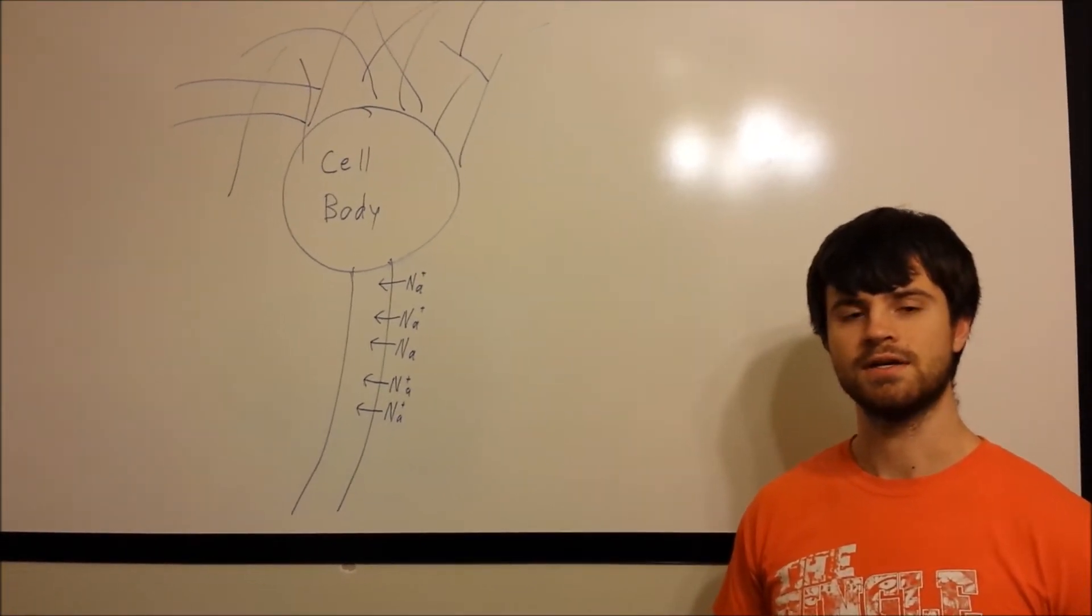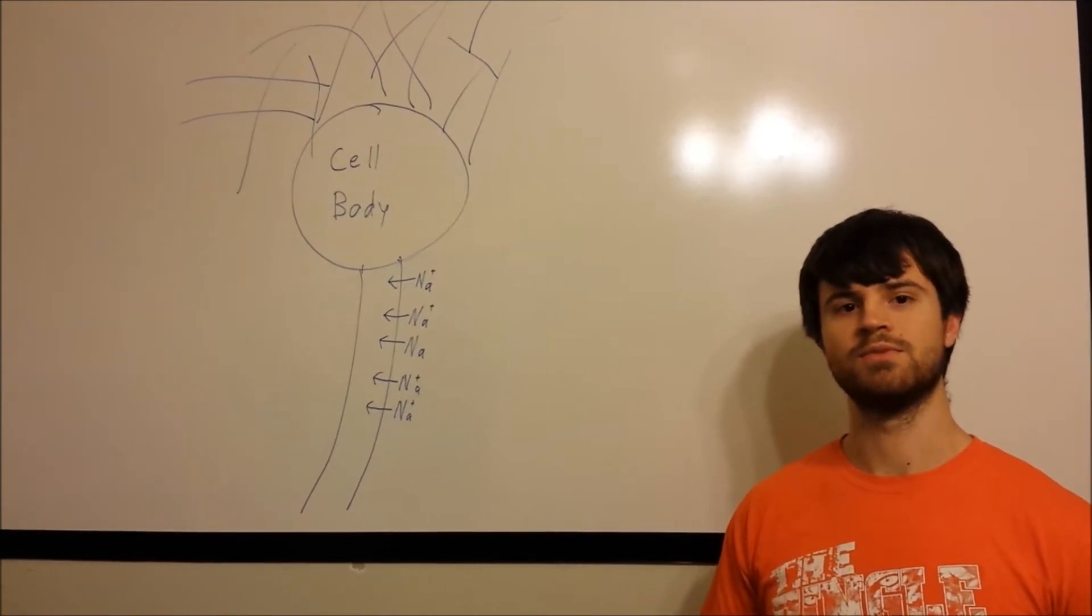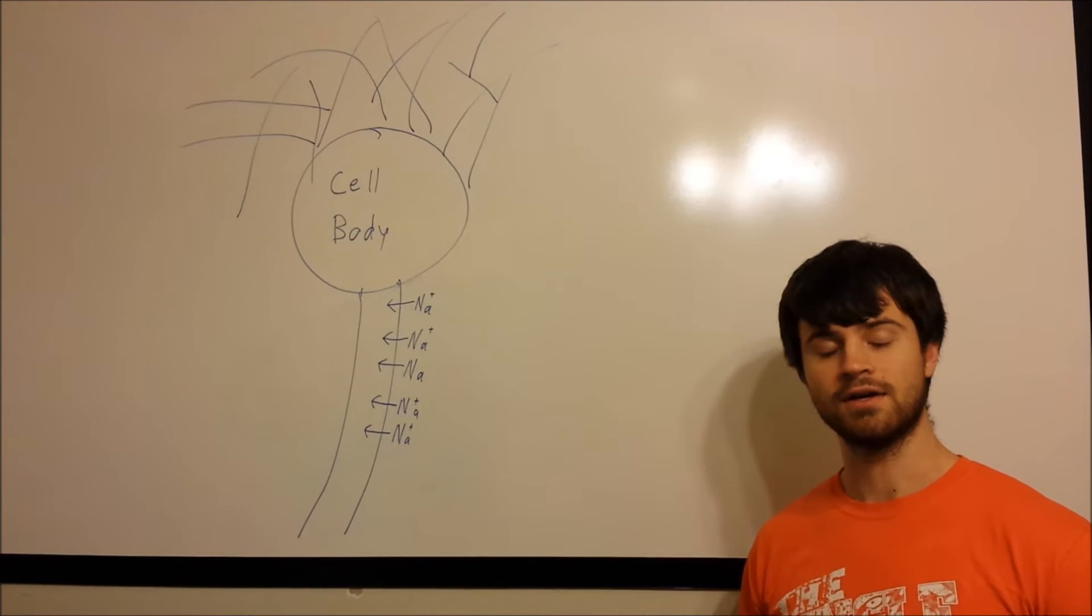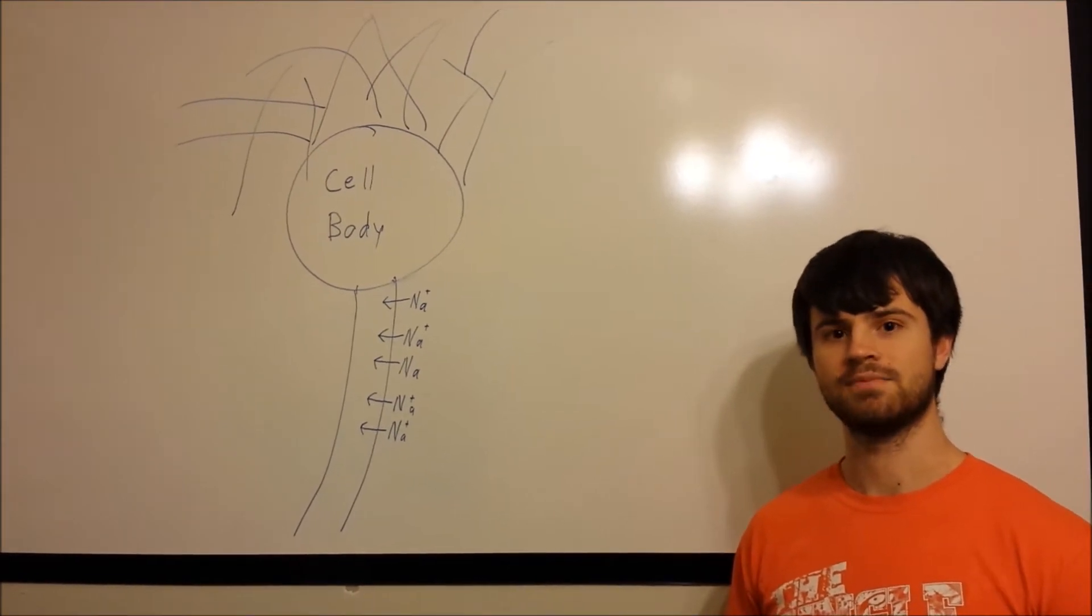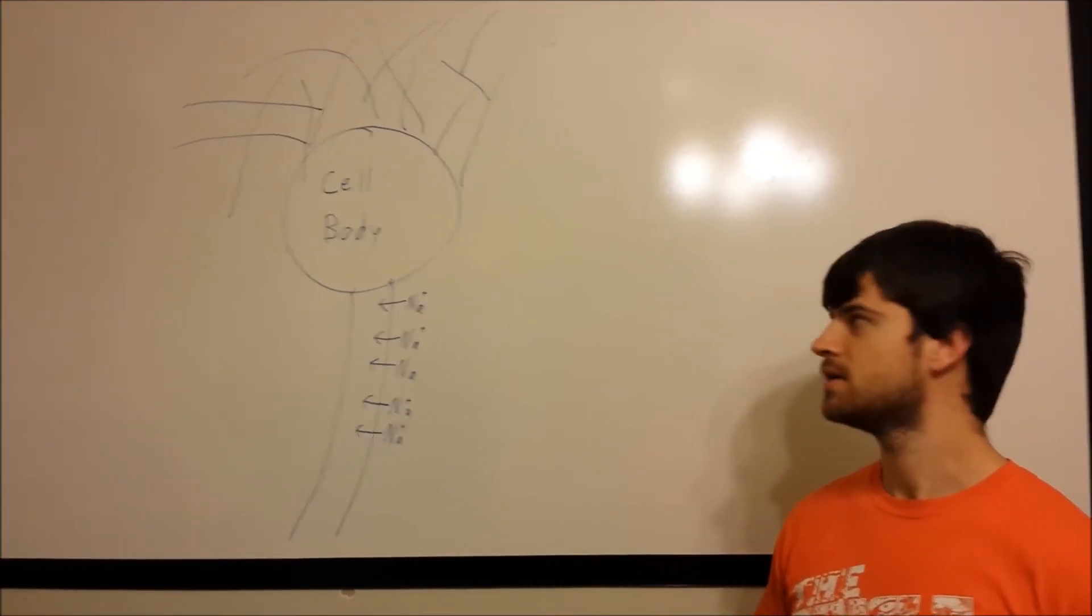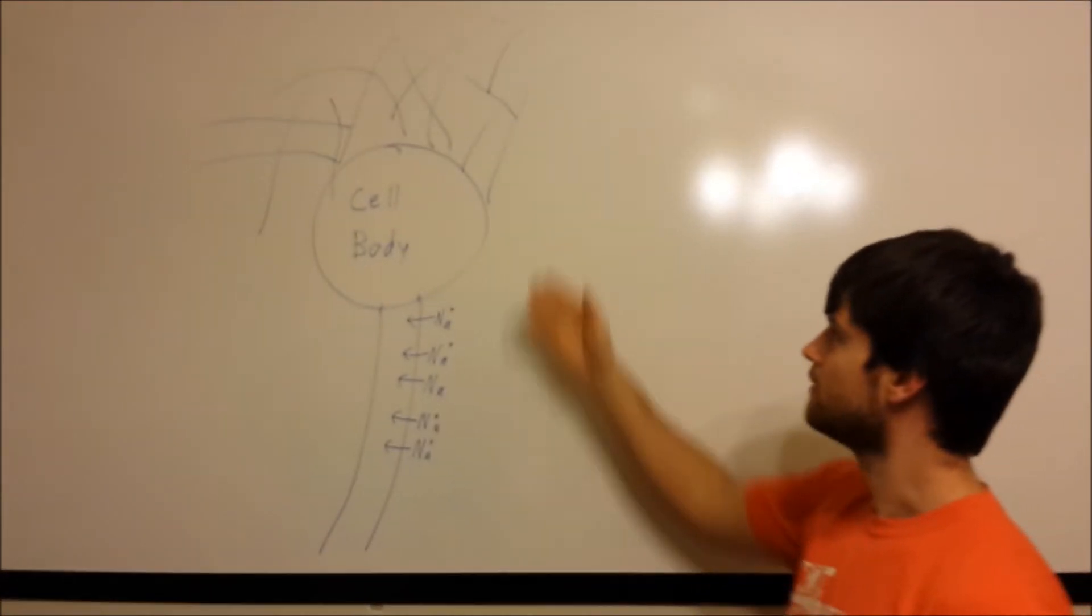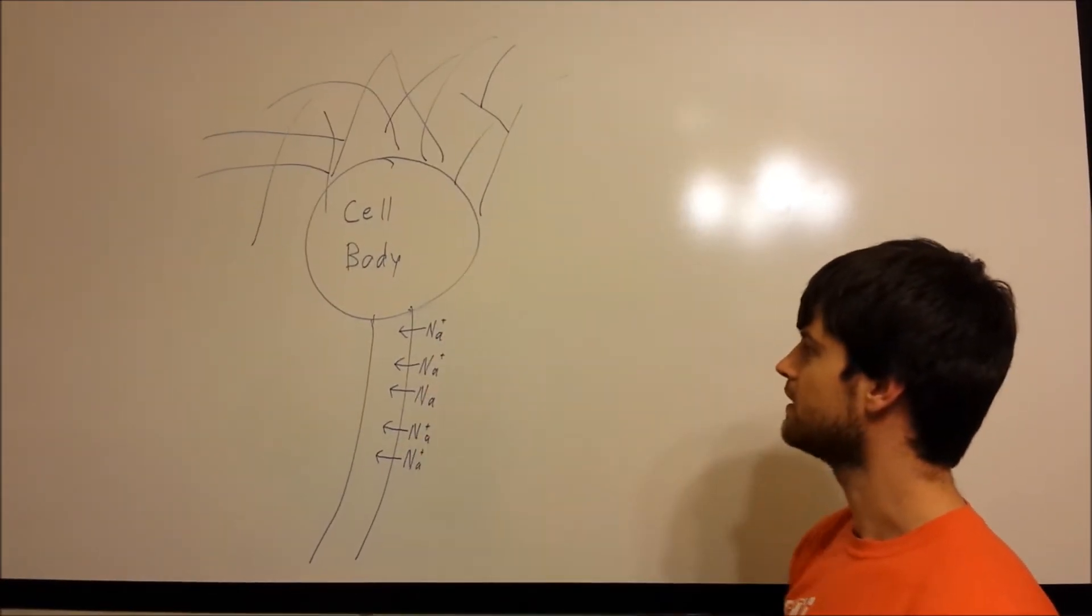Now, the reason this works is whenever there's a muscle movement, there's an electrical event that occurs. This electrical event is called an action potential. And what an action potential describes is, as you can see here, I've drawn a neuron. You have dendrites, the cell body, and the axon.